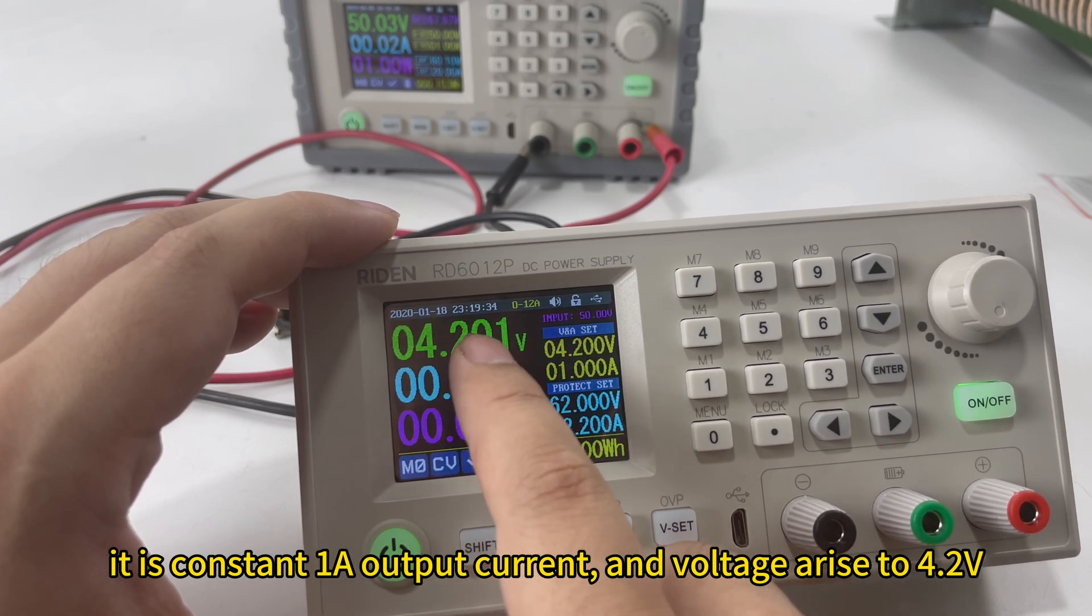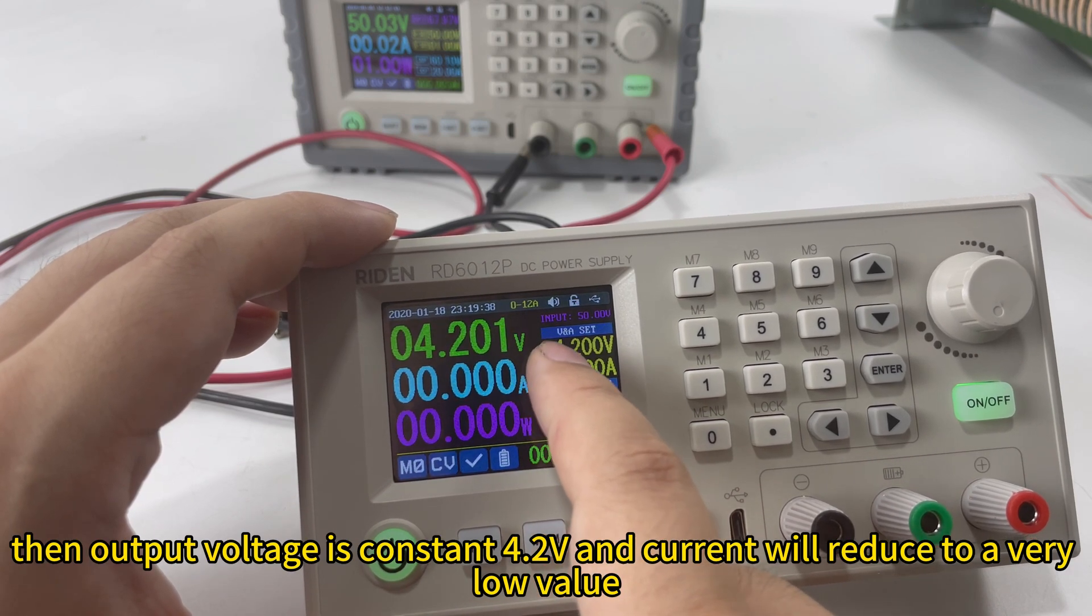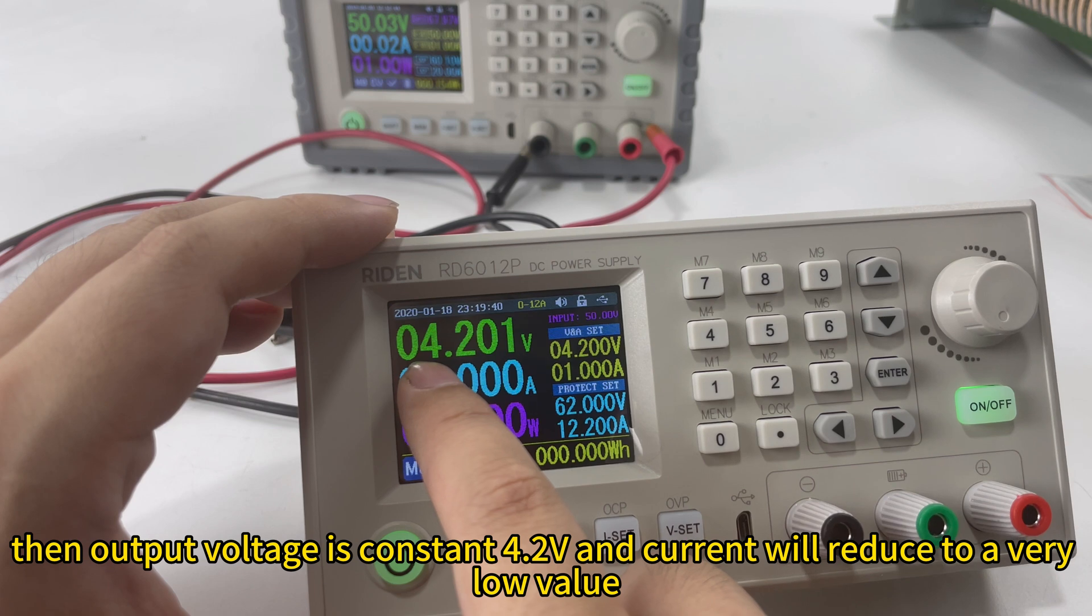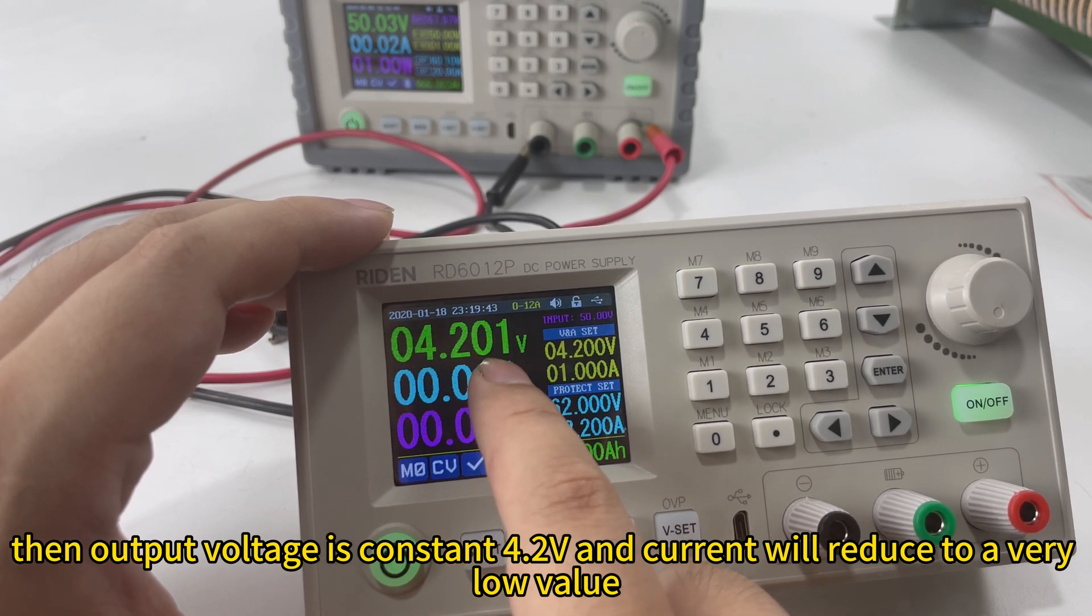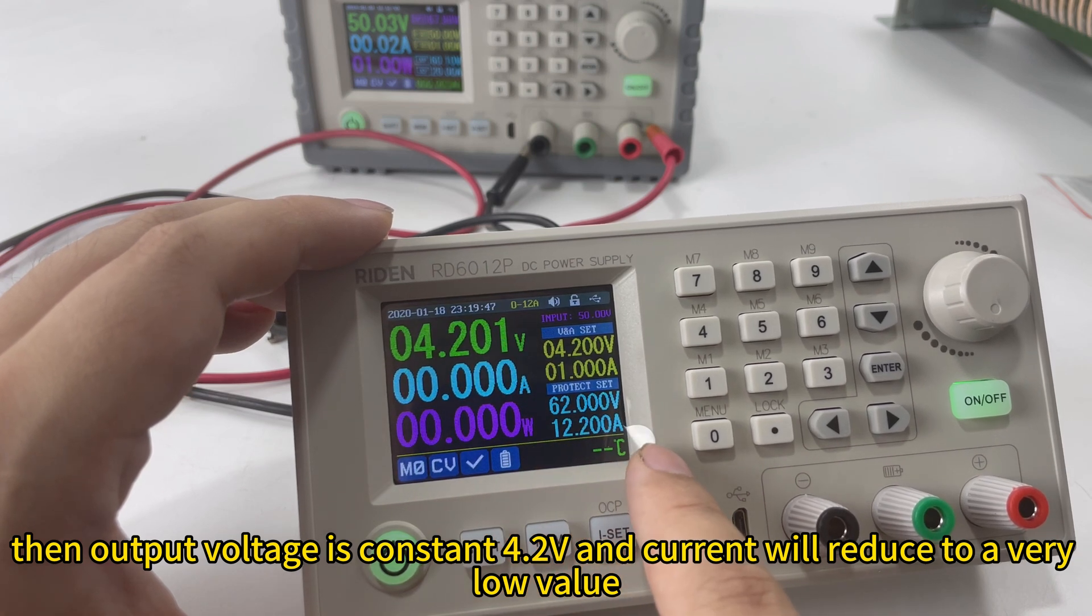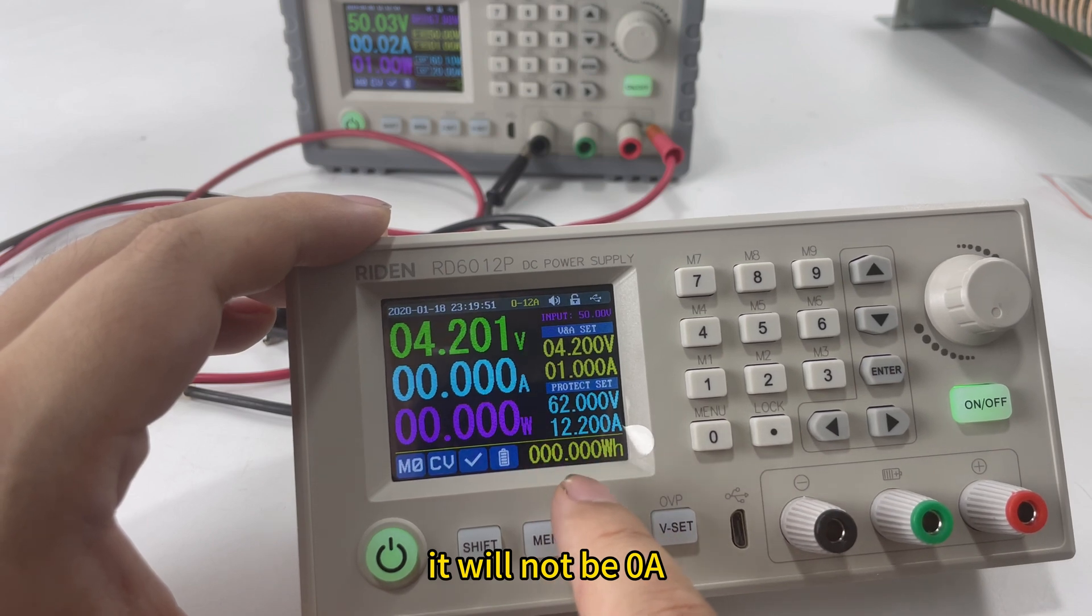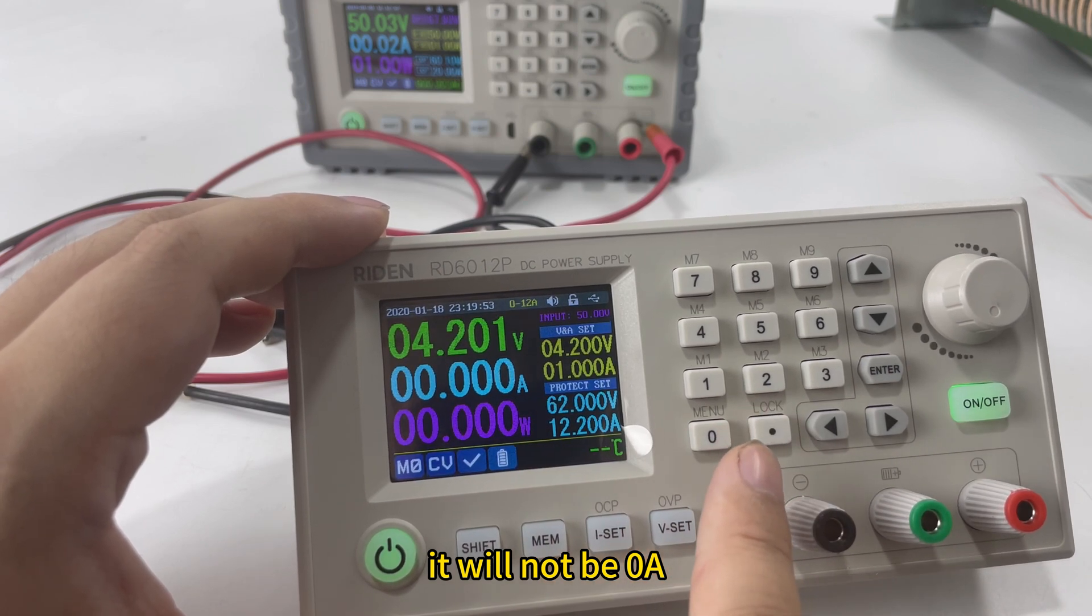Until it is up to 4.2V, it changes to CV mode. The output voltage will be 4.2V always. And the current will reduce, reduce, reduce until a very low value. It will not be zero because the battery will consume power.